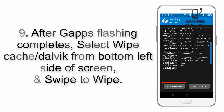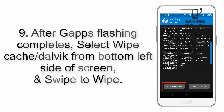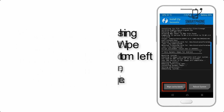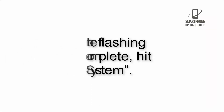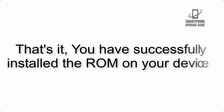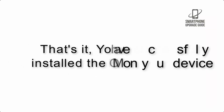Step 8: Flash the GApps zip package in the same manner. Step 9: After GApps flashing completes, select Wipe Cache and Dalvik from the bottom left side of the screen and swipe to wipe. Step 10: When the flashing process is complete, hit Reboot System. That's it — you have successfully installed the ROM on your device.